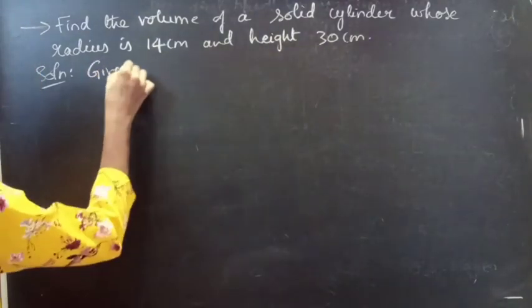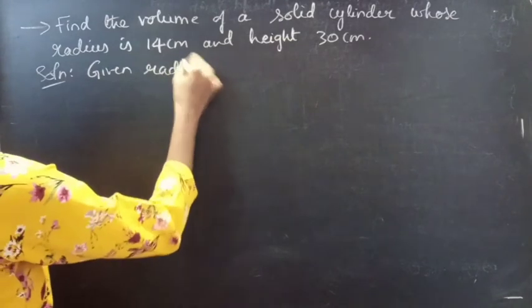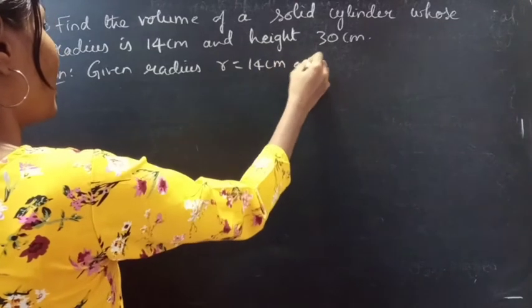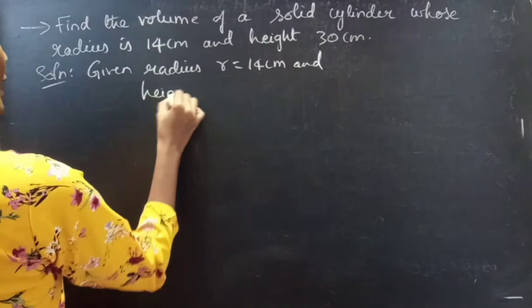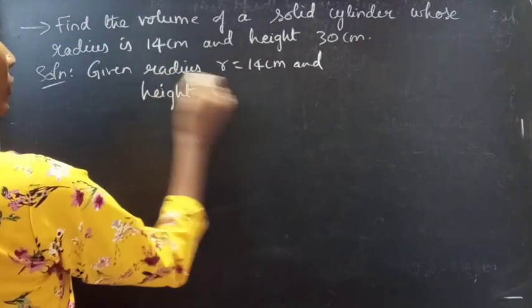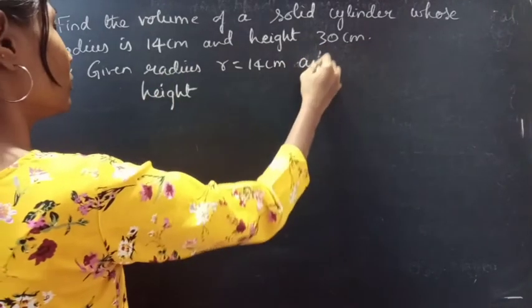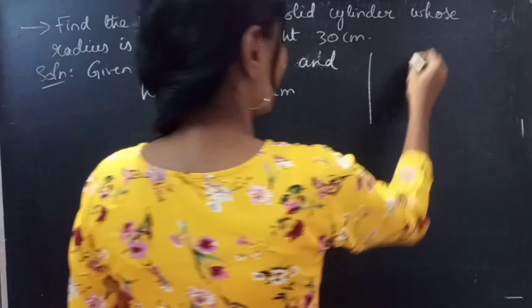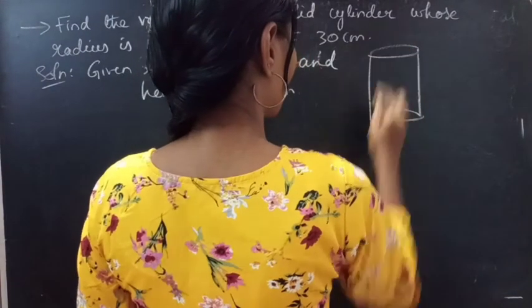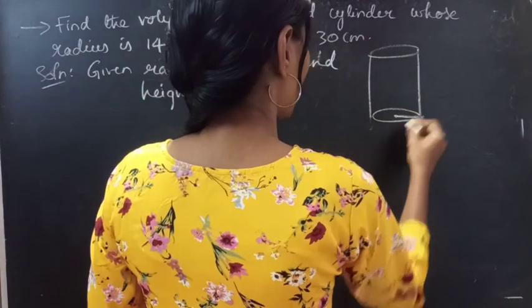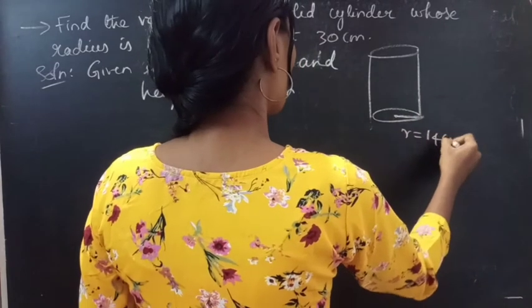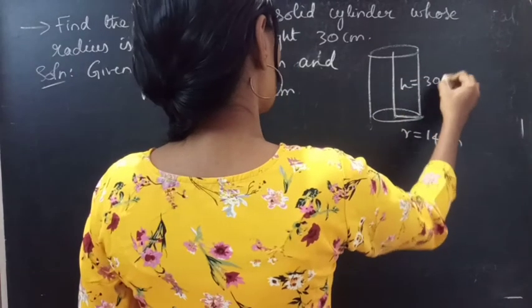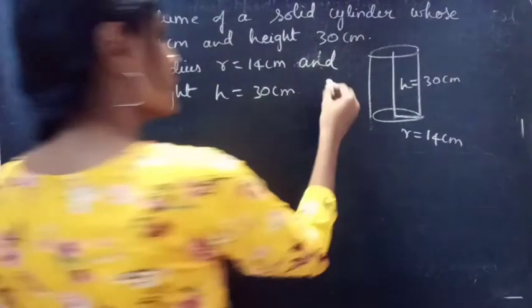So we are given radius r equals to 14 cm and height h equals to 30 cm of a solid cylinder.